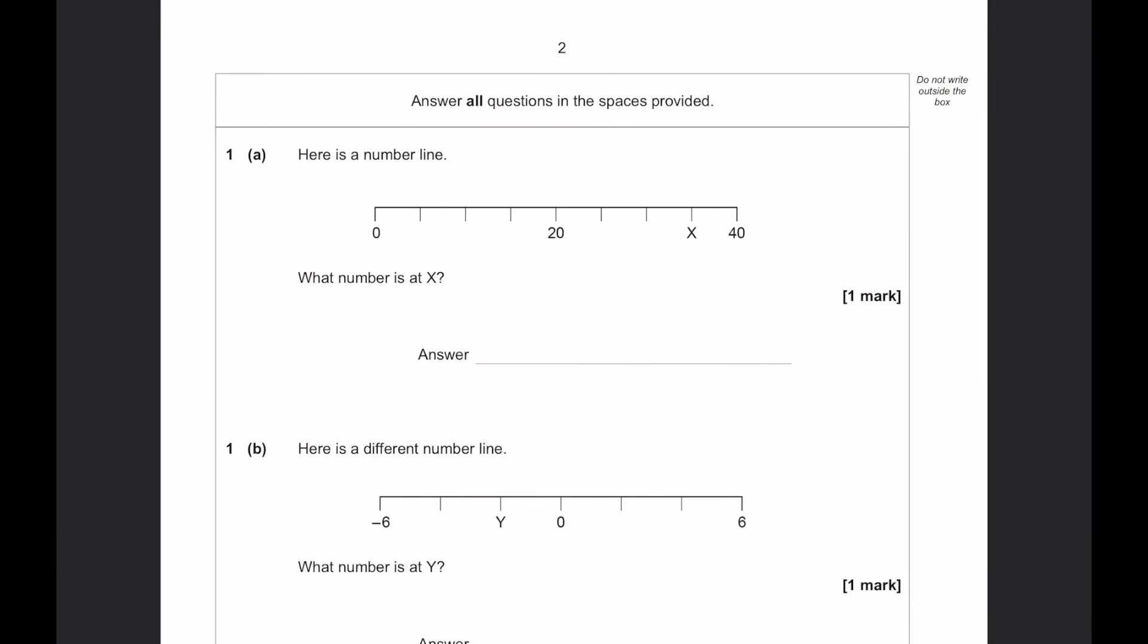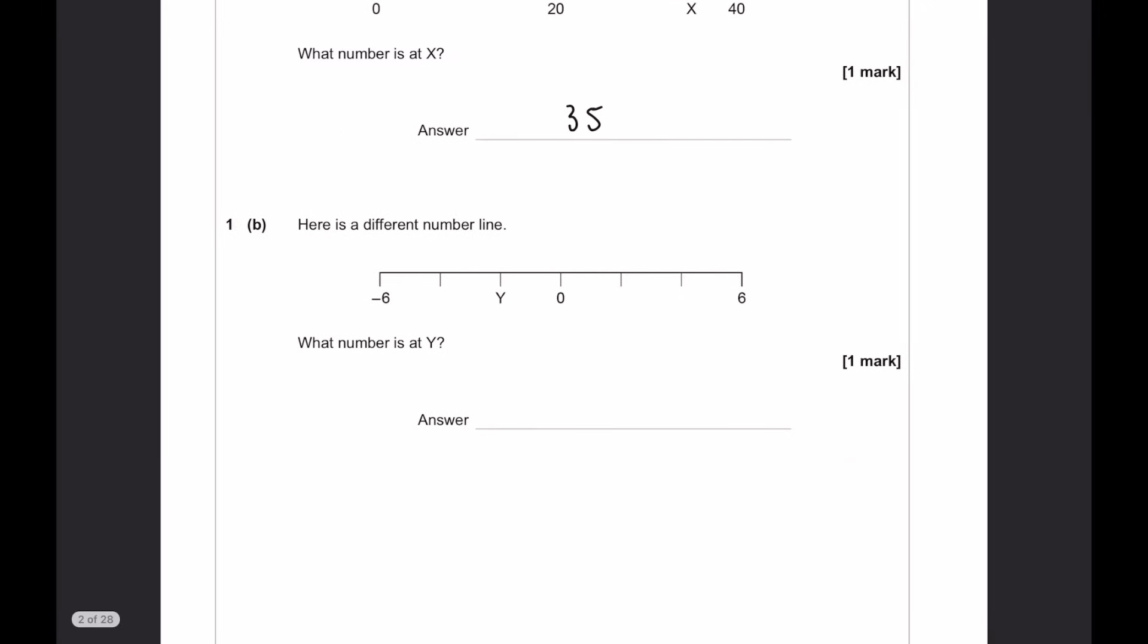Question number one, we have a number line, what number is at x? Well, we can see here 25, 30, 35. Here is a different number line, what number is y at? So, 0, we've got three spaces between minus 6, so each one must be minus 2.